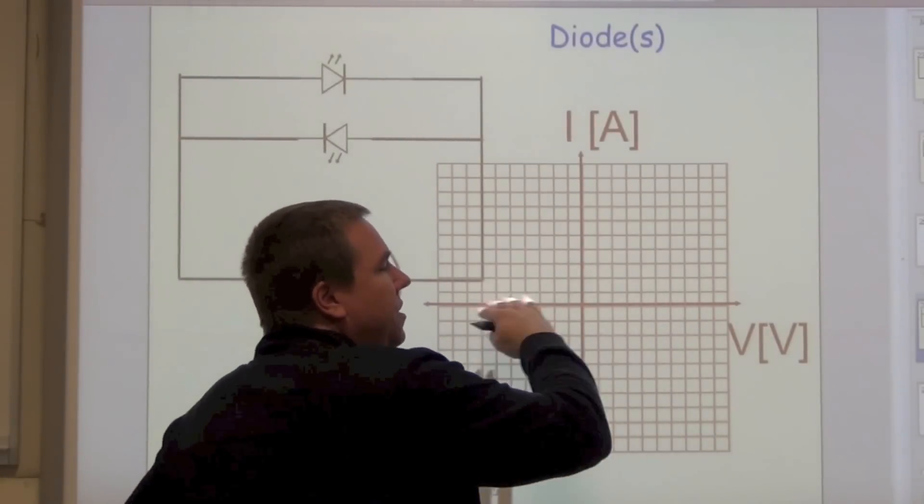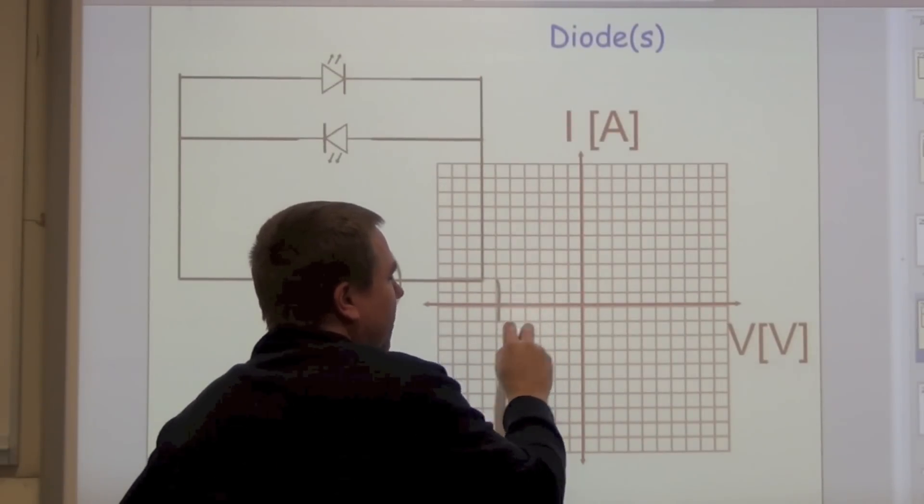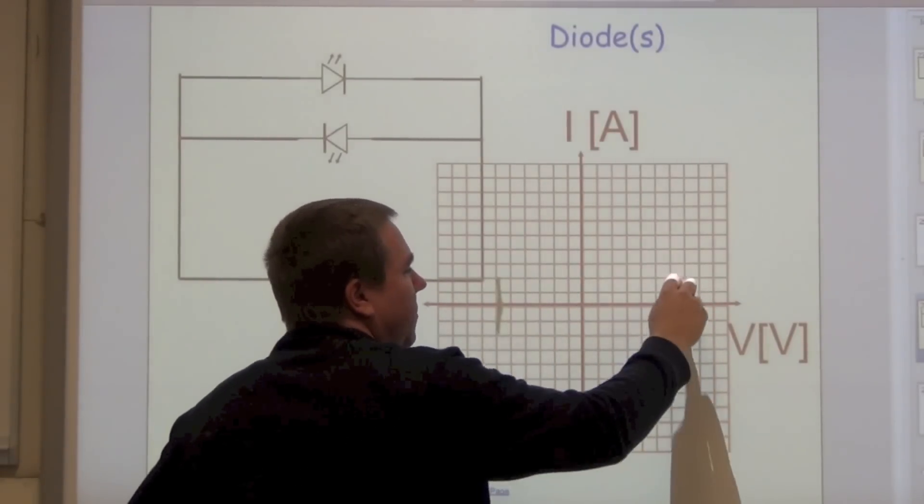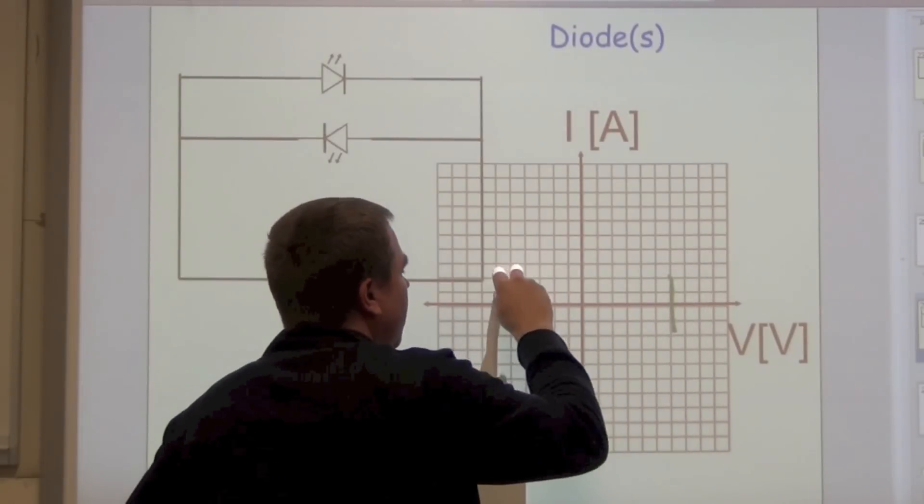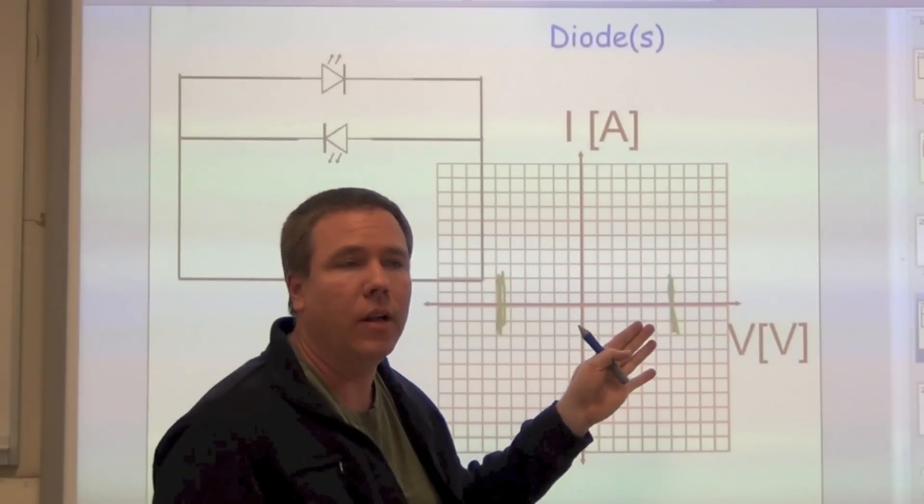So if we were to plot a diode where voltage is on the x and current is on the y, if we do not exceed the voltage threshold, so let's put our voltage threshold right here and here. There's my voltage threshold. If I don't pass that voltage threshold, then I cannot have current flow.